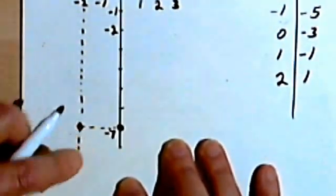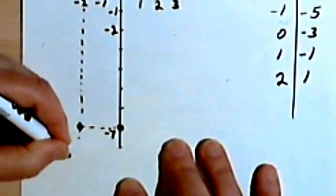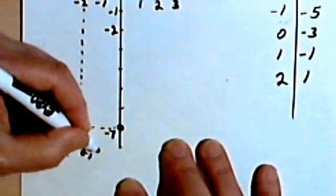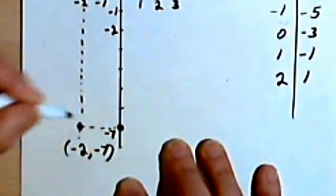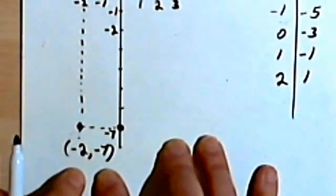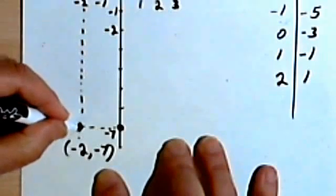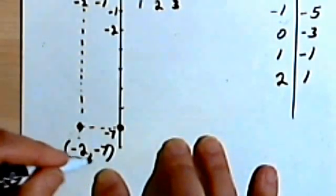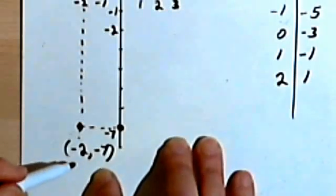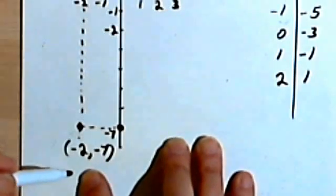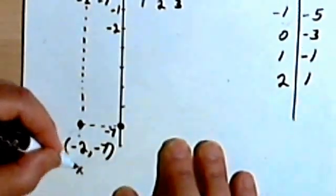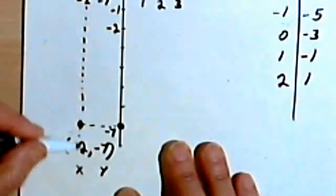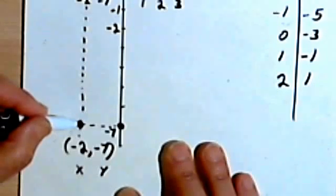And I can label that spot. I'm going to label with parentheses, negative 2, comma, negative 7. This is called an ordered pair. When I want to show a point on a graph, I use an ordered pair. It's an ordered pair because the numbers have to be in order. The first number is going to be the x-number and the second number is the y-number. So my ordered pair for this spot is negative 2, negative 7.